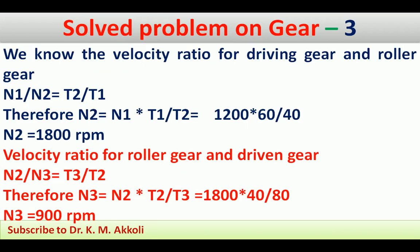First we apply the velocity ratio for the driving gear and the roller gear: N1 by N2 equals T2 by T1. Since we know N1, T2, and T1, we can find N2. Therefore N2 equals N1 times T1 by T2, which is 1200 times 60 divided by 40, giving N2 equal to 1800 RPM.